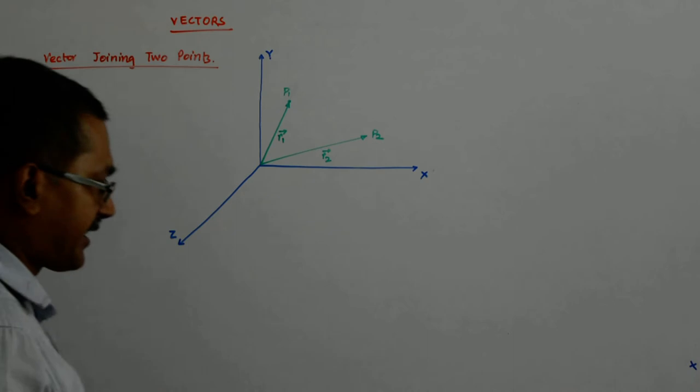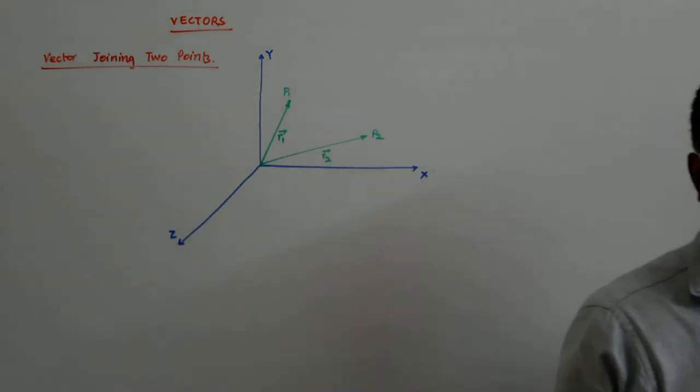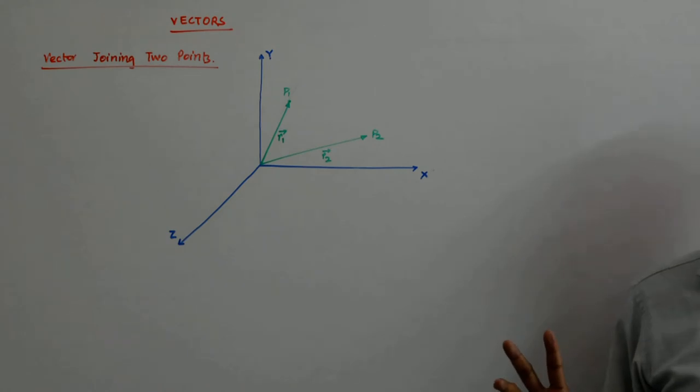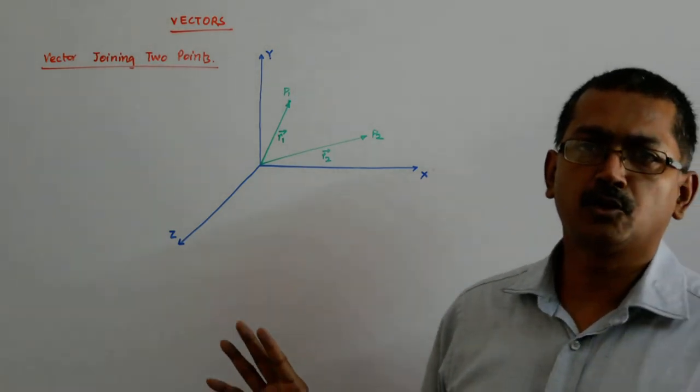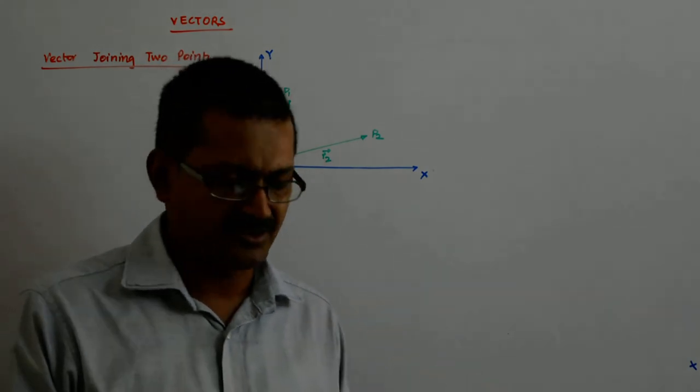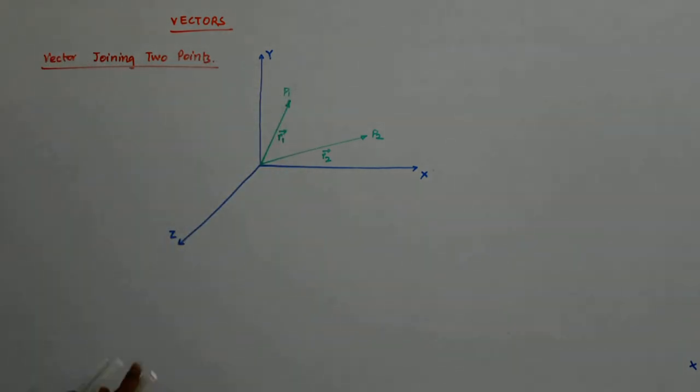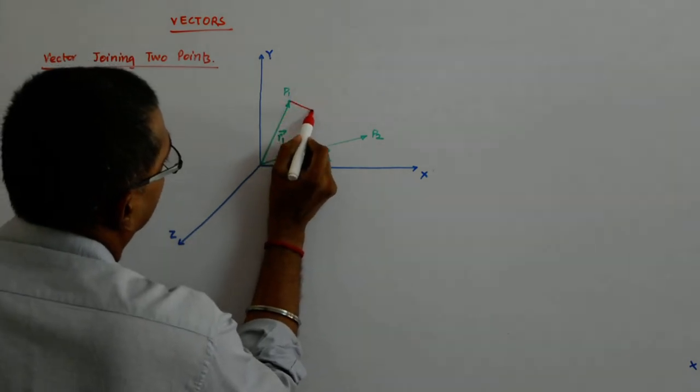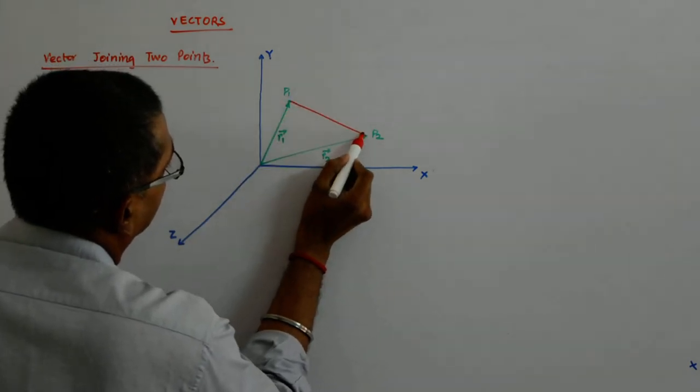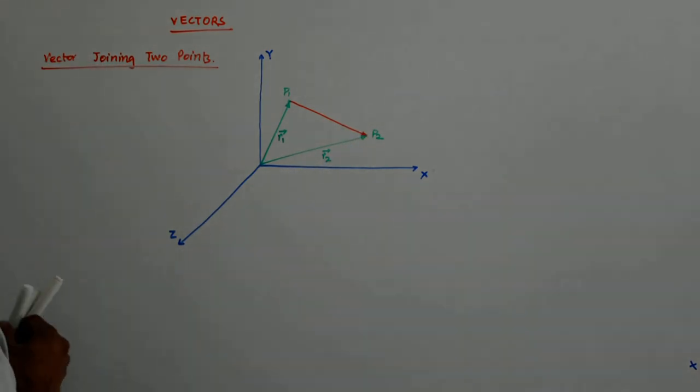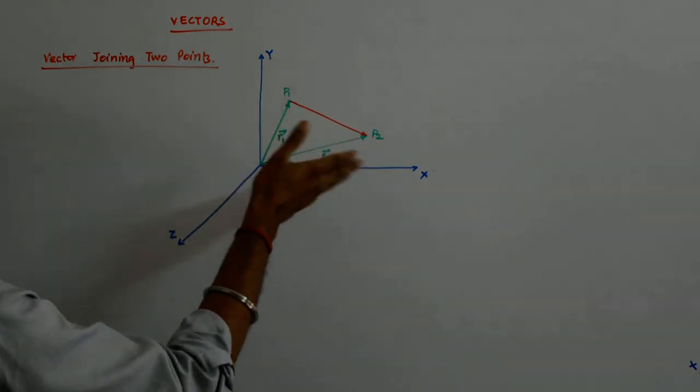Now I want a vector that connects these points in a particular direction and I want that vector to be expressed in terms of these position vectors. You understand? So maybe I have, I first will do this. See? I want to express P1P2 in terms of this.